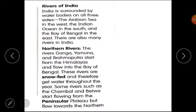Now students, please open your content book, Lesson number 4: Rivers of India. Let's start reading. India is surrounded by water bodies on all three sides — the Arabian Sea in the West, the Indian Ocean in the South, and the Bay of Bengal in the East. There are also many rivers in India. First part: Northern Rivers. The rivers Ganga, Yamuna, and Brahmaputra start from the Himalayas and flow into the Bay of Bengal.